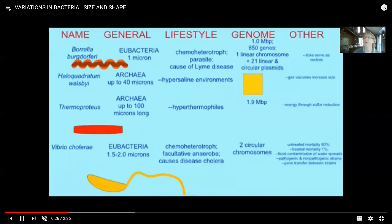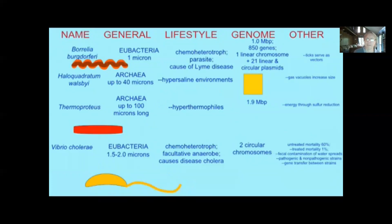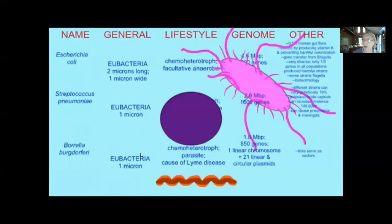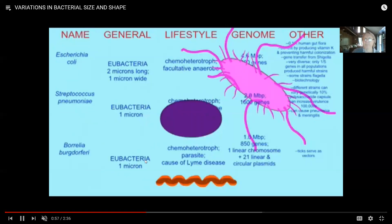Not only have bacteria had recent times to diversify, but there was also a billion and a half years - a third of the history of life on Earth - where only bacteria existed, and they clearly diversified a great deal. Going through some of the variations: many bacteria are a micron or two in size, such as Streptococcus pneumoniae or E. coli. They can be smaller than that.